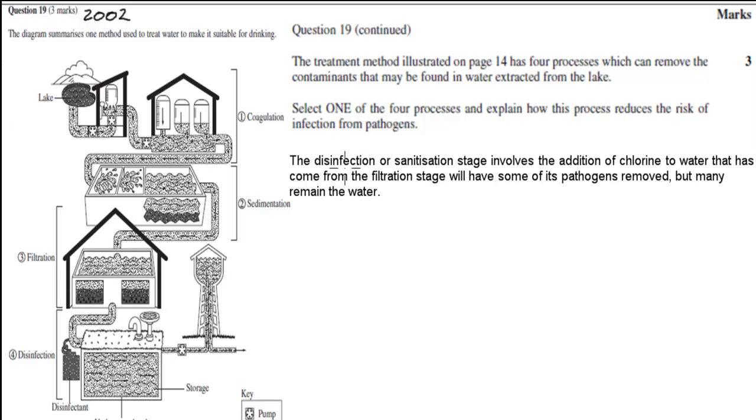So first what I wrote is disinfection or sanitation stage, both of these are names for that stage, involves the addition of chlorine to water that has come from the filtration stage. Because this will have some of its pathogens removed, but many remain. So after the water has come from the filtration stage, quite a few pathogens will be removed, but not all, which means we still need another stage to get rid of the remaining ones. This is where obviously the disinfection stage will come into play. And we talked about what happens here, we add chlorine to water. We haven't said yet what chlorine does, but we'll talk about that now.